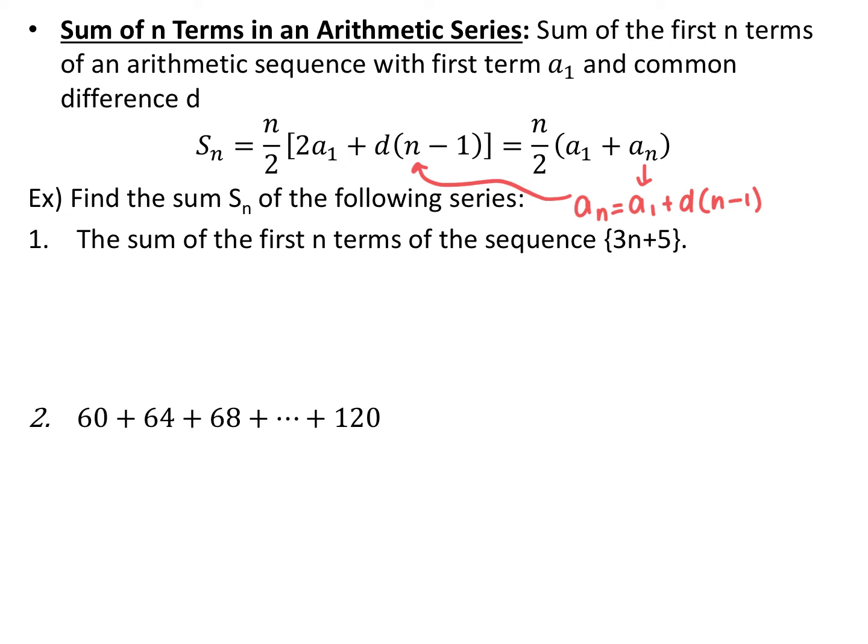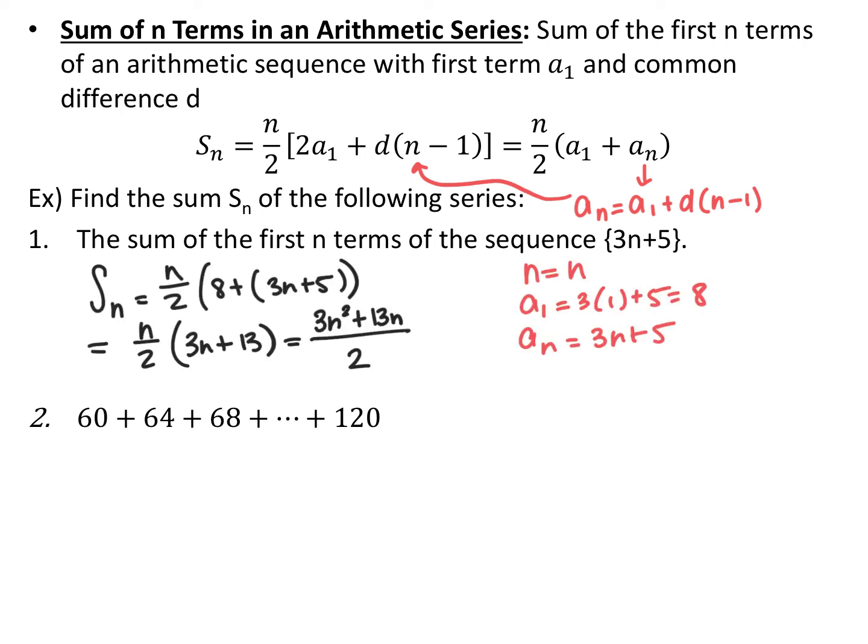For the first sum example, we have the sequence 3n plus 5 and want the sum of the first n terms. The first term is 8 (plug in 1), and the nth term is just 3n plus 5. So S sub n equals (n over 2) times (8 plus 3n plus 5), which simplifies to (n over 2) times (3n plus 13), or equivalently (3n squared plus 13n) over 2.